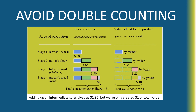But if you buy eggs separately and you're going to just consume eggs as a final good, that counts. If you buy flour, that counts. But if you buy a cake, you don't count the cost of the cake and also the cost of the flour that went into the cake and the cost of the eggs that went into the cake as well.